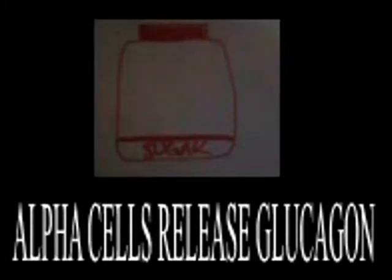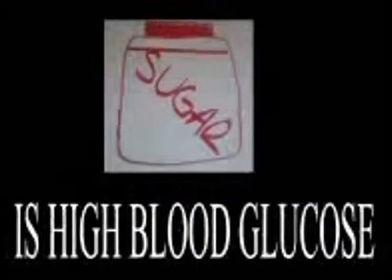Alpha cells release glucagon, and this would be known as hypoglycemia. Vice versa, hyperglycemia is high blood glucose.